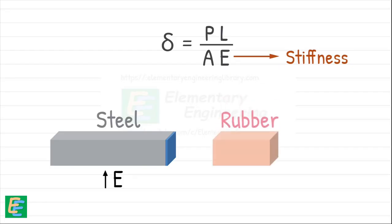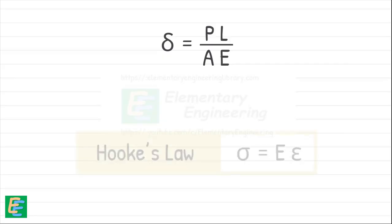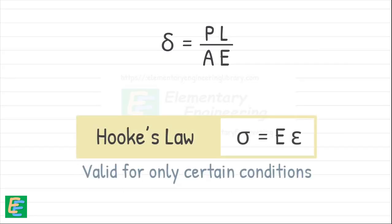Rubber, on the other hand, has very low modulus of elasticity. So it deforms easily even under small loads. We need to keep in mind that Hooke's law is only valid for certain conditions. Hence, the formula of deformation we just derived will also obey those conditions.